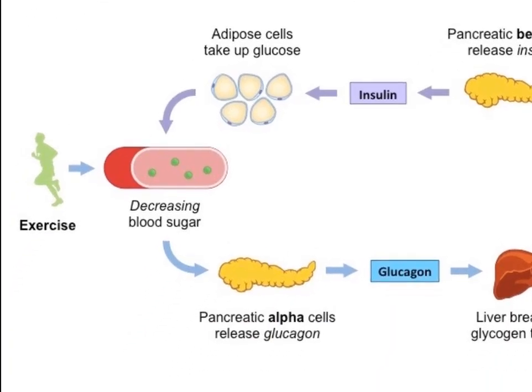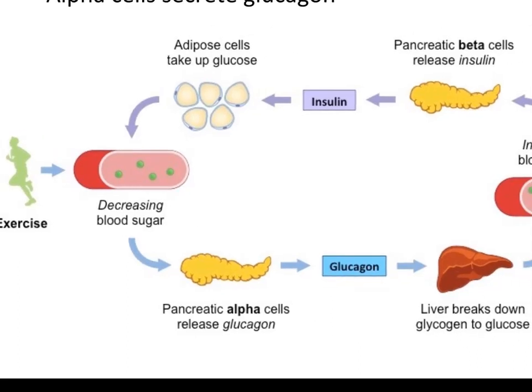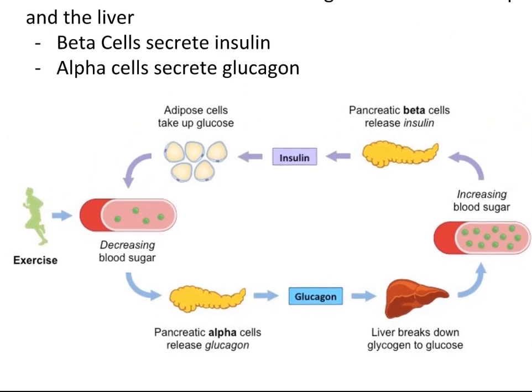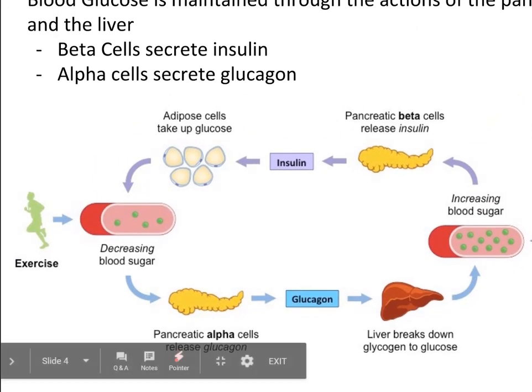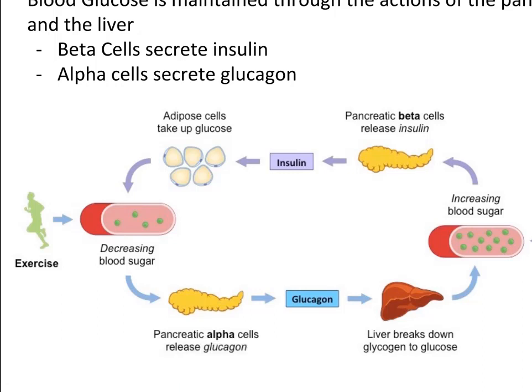Other cells, such as in your liver and muscles, can store any excess glucose as a substance called glycogen. Your body uses glycogen for fuel between meals when you don't have any glucose in your body. So it breaks the glycogen down into glucose, and as the glucose moves into your cells, your blood glucose levels decrease. Glucagon works to counterbalance the actions of insulin.